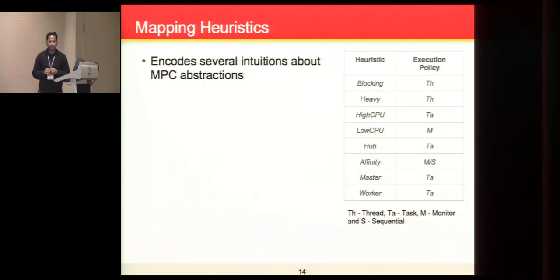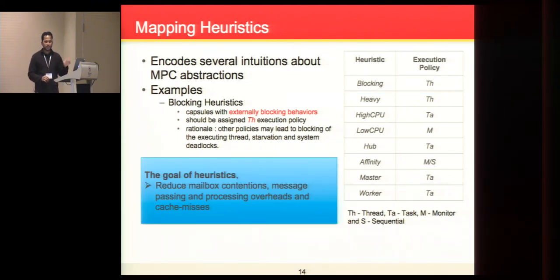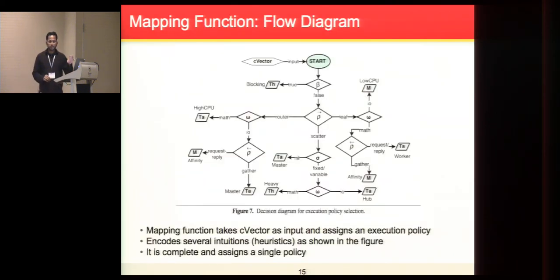Let's see how our mapping function takes the capsule behavior and produces the execution policy. Our mapping function relies on a set of mapping heuristics listed in the table. These heuristics try to encode several intuitions about the MPC abstractions. For example, blocking heuristics state that if a capsule performs externally blocking behavior, then it must be assigned thread execution policy. The rationale is that if you assign some other policy, it may block the executing thread and result in system deadlock or starvation. Similarly, all the other heuristics have a goal that assigns an execution policy such that it reduces the mailbox contention, message passing overhead, message processing overhead, and possibly cache misses. We encode these heuristics in the form of a decision diagram. This diagram is complete and assigns a single execution policy. It takes a capsule C vector or behavior vector as input and produces an execution policy.